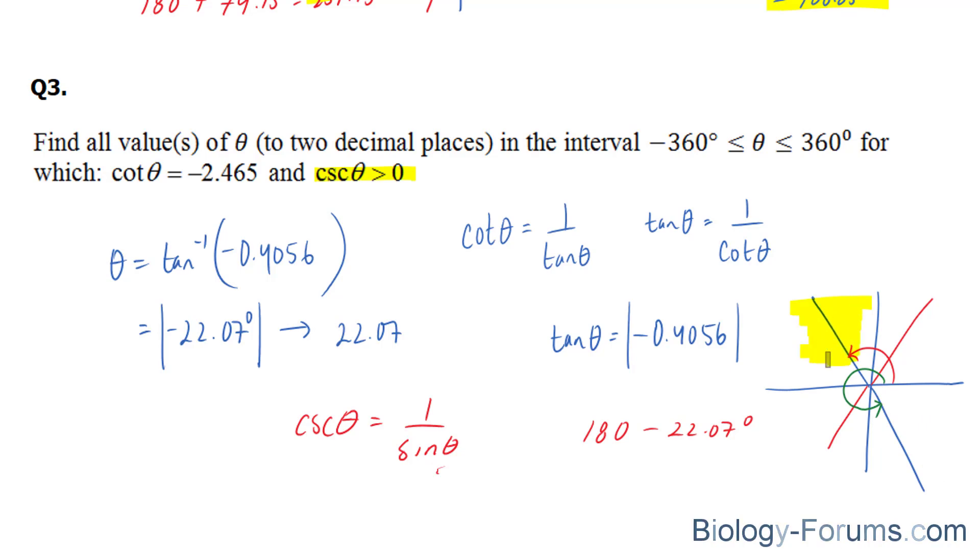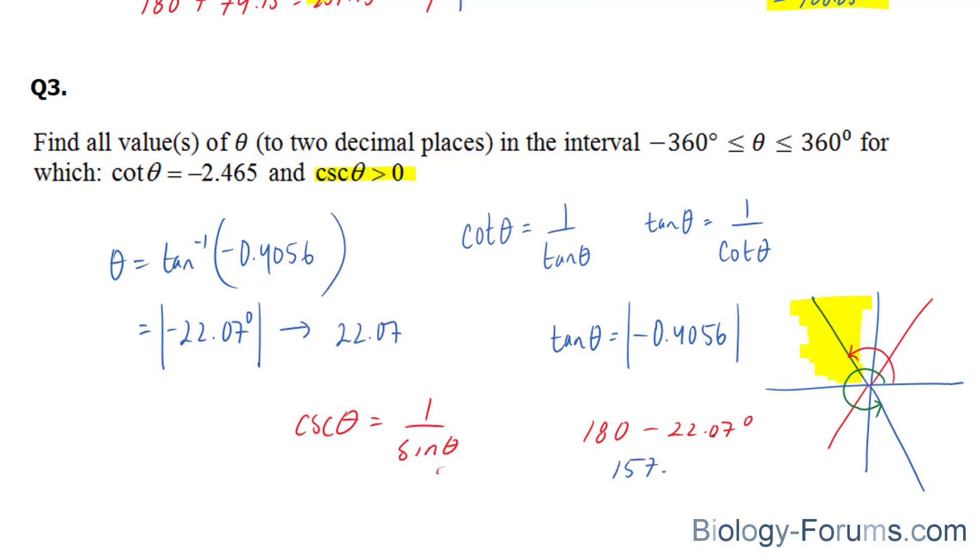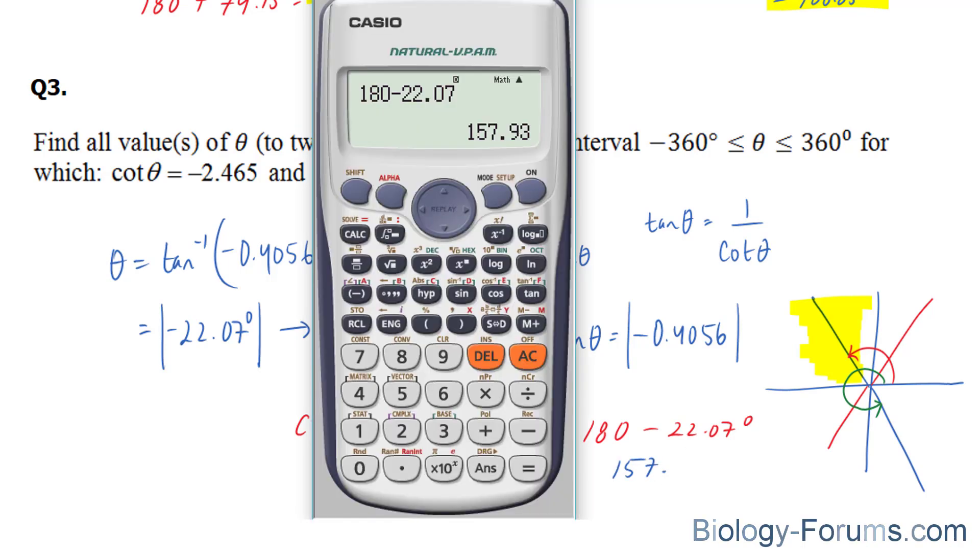and sine is positive here and here. Now, since in our example the angle is here and here, this is the only one you're going to focus on, and this one becomes useless to us. We're going to avoid this one and only use this one.